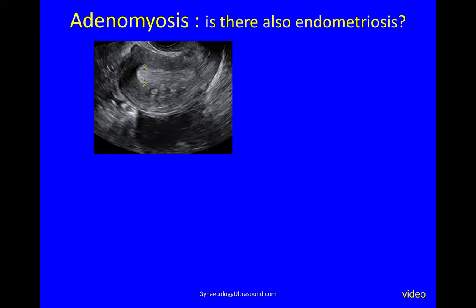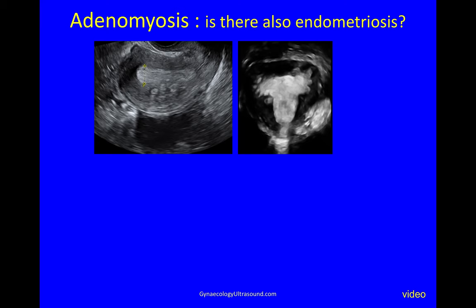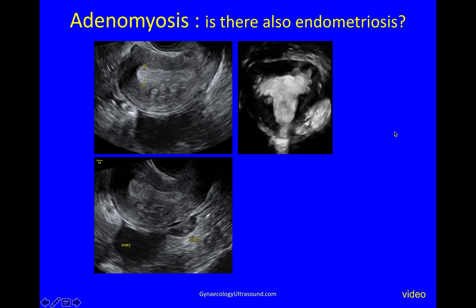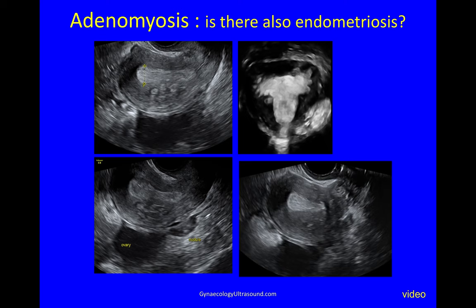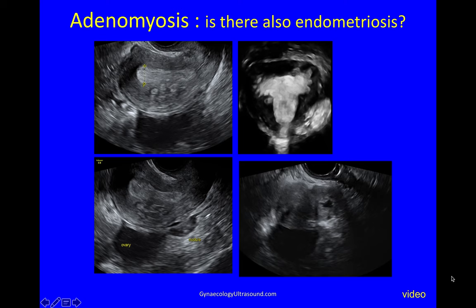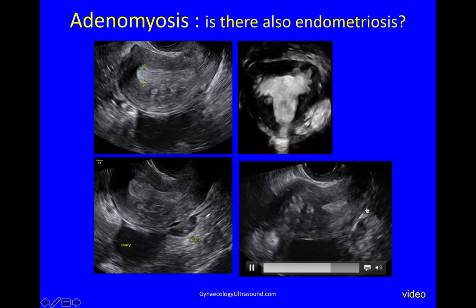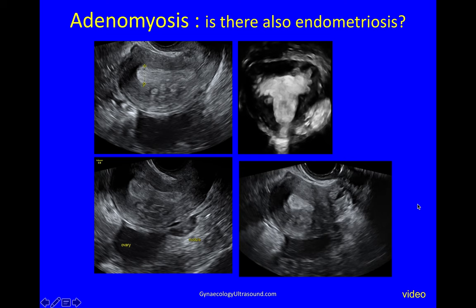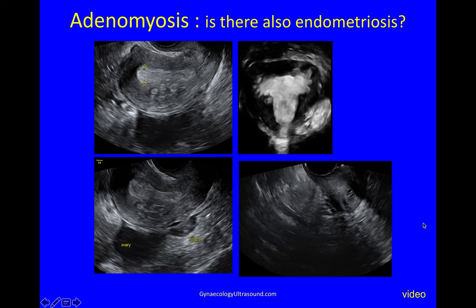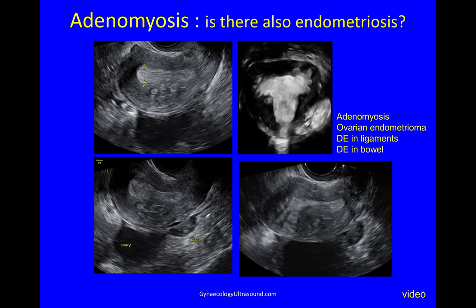In another example, an anteverted uterus in the luteal phase shows islands of endometrium in the myometrium giving a typical budding appearance. On 3D, having diagnosed adenomyosis, you then find the endometriosis: an ovarian endometrioma, a bowel nodule of deep endometriosis, and deep endometriosis in the ligaments at the torus. With this uterus showing really bad adenomyosis, you can see islands of endometrium in the myometrium, the ovarian endometrioma, the bowel nodule, and the ligament deep endometriosis — so it's very useful to look carefully in women with adenomyosis for coexisting endometriosis.